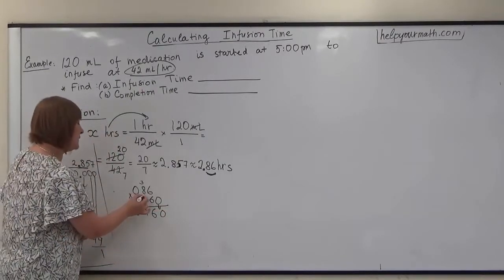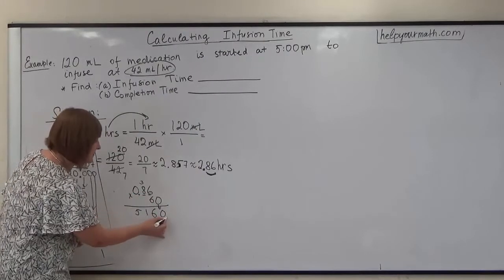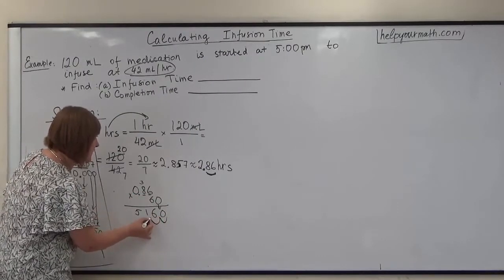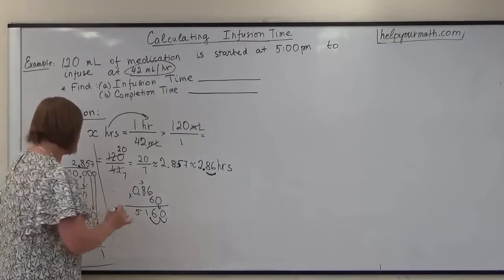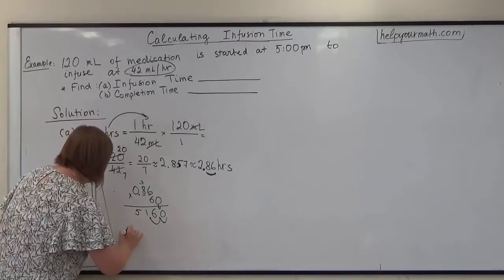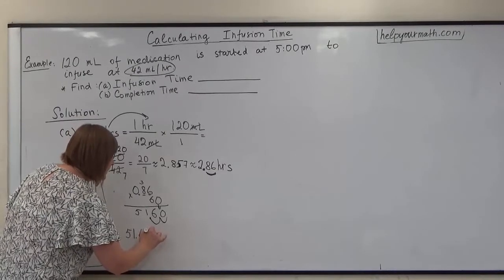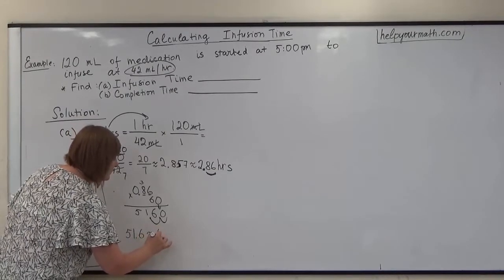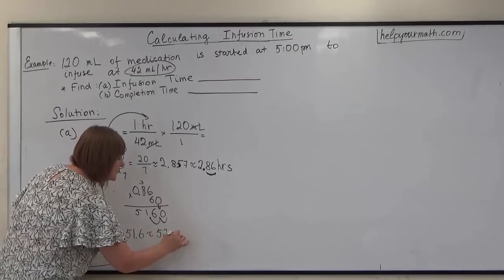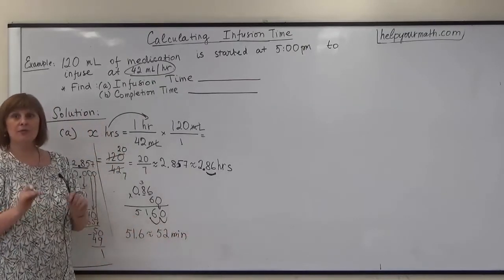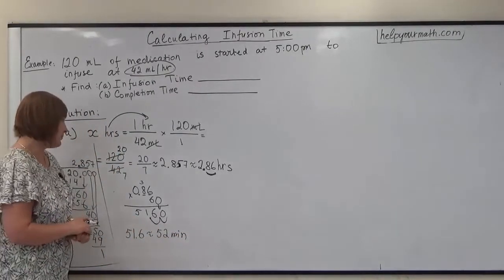After that we will count 2 places from the right to the left. So we will have our time 51.6 minutes, that we can round to actually 52 minutes. That's how much accuracy we need at this point.